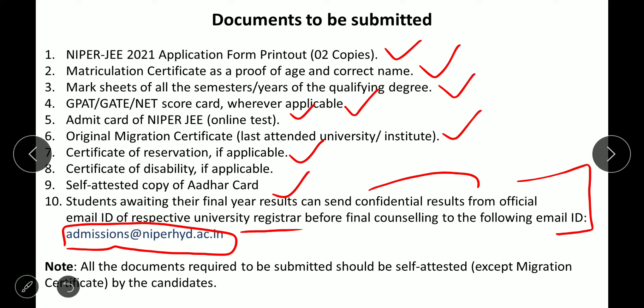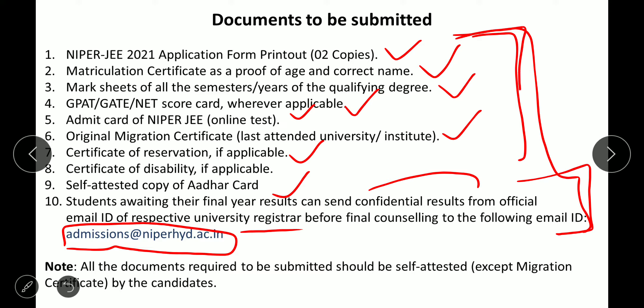One important thing: except for the migration certificate, all listed documents need to be self-attested - meaning you must sign them. The migration certificate must be submitted in original format, while all other documents require copies. Since counseling is online, you cannot submit hard copies directly. So compile all scanned copies or PDFs of these documents into a single combined PDF file.